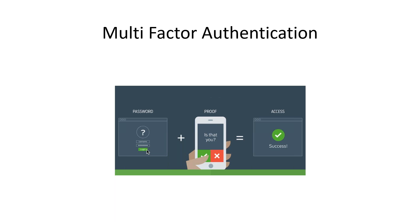When logging in to Employer on Demand, you will still enter your username and password. Then you'll be required to verify your identity. The easiest way to verify your identity would be through a Duo Push, which sends an authentication request to your smartphone via the Duo app that you will download. This is the fastest and most secure way to access your data.